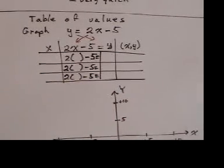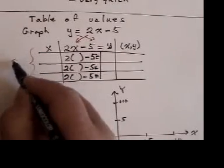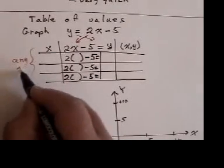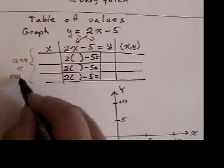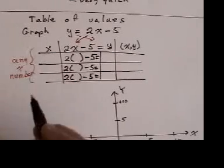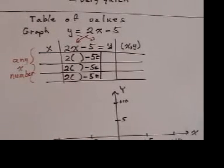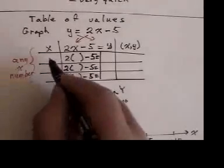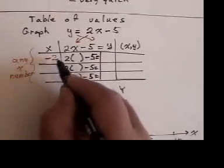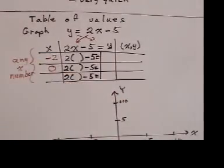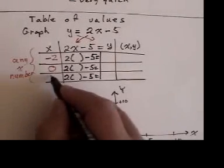I then go here and invent any x number I want, and it doesn't matter which one you invent. I like having some negatives. I like having zero. It's a really easy number to work with. And then I might have a positive.